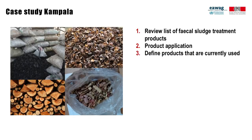The third step is defining products that are currently used. Because fecal sludge treatment products do not exist yet, we cannot identify their market volume directly. So for example, as a solid fuel in Kampala, currently charcoal, firewood, coffee husks, and sawdust are used. These are substitute products that could be replaced by dried fecal sludge.